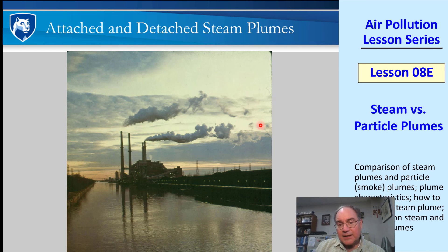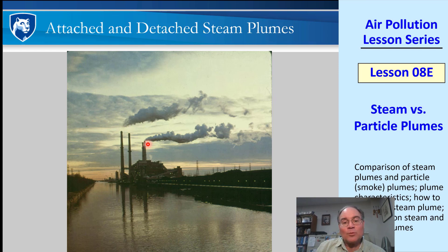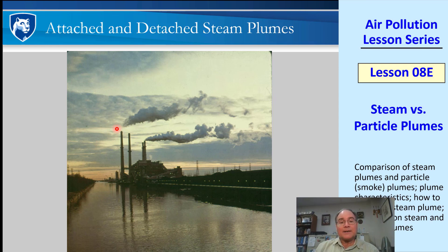This one is an attached steam plume and this one is detached. When a plume is buoyant, it comes out of the stack and levels off at some higher elevation; when there's no buoyancy, it goes straight across. The cooler plume has water condensing right at the stack exit — that's an attached steam plume. The warm plume takes some time to cool down enough to start condensing — once it condenses you start to see it, which is a detached steam plume.